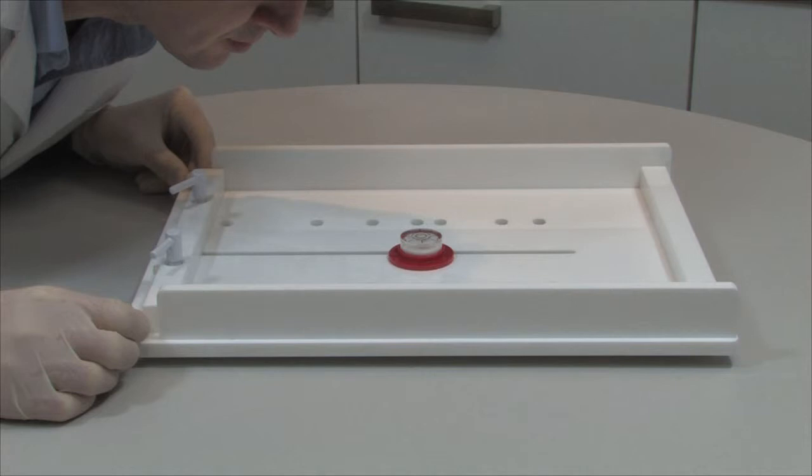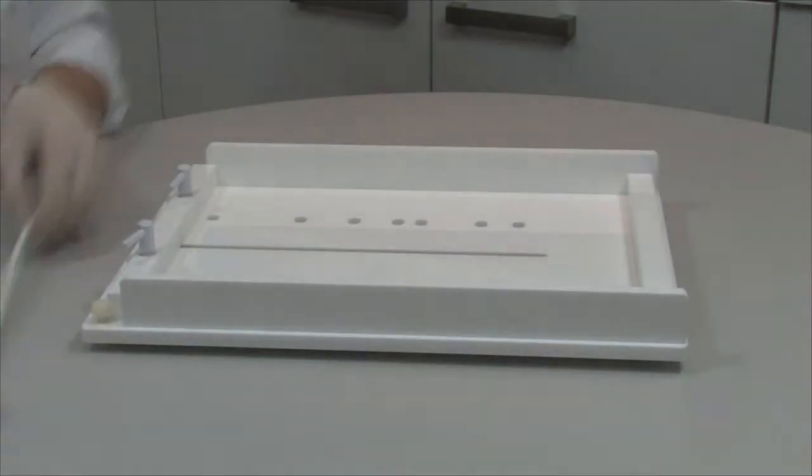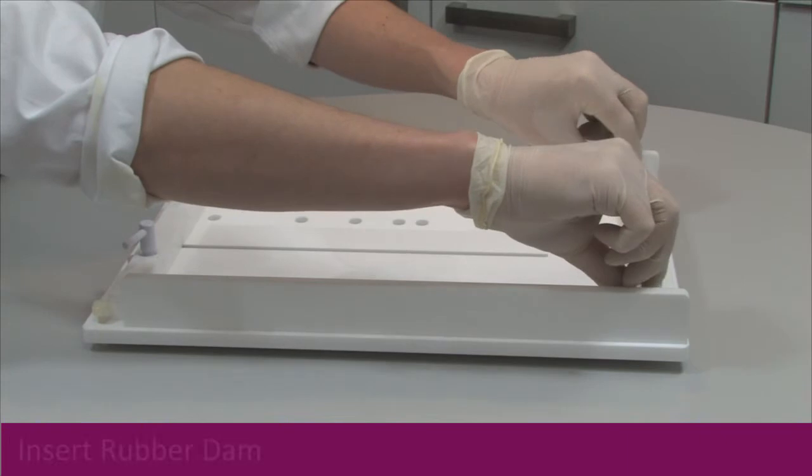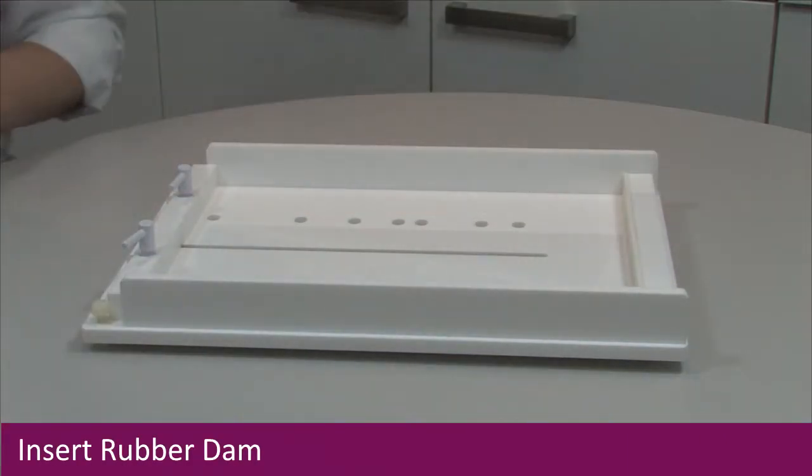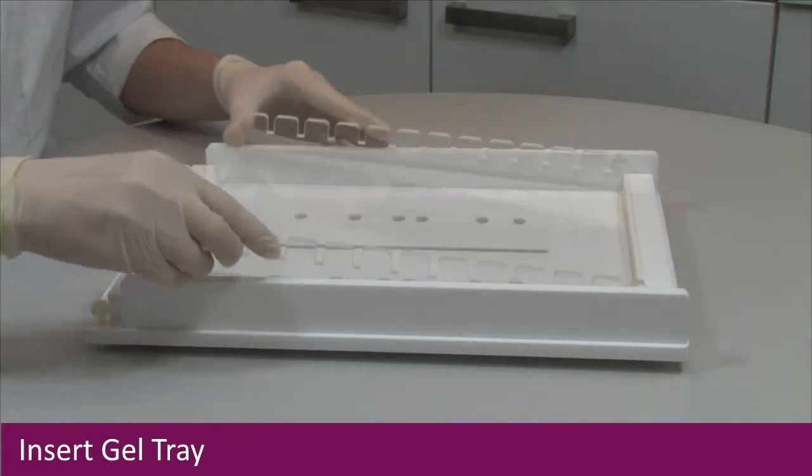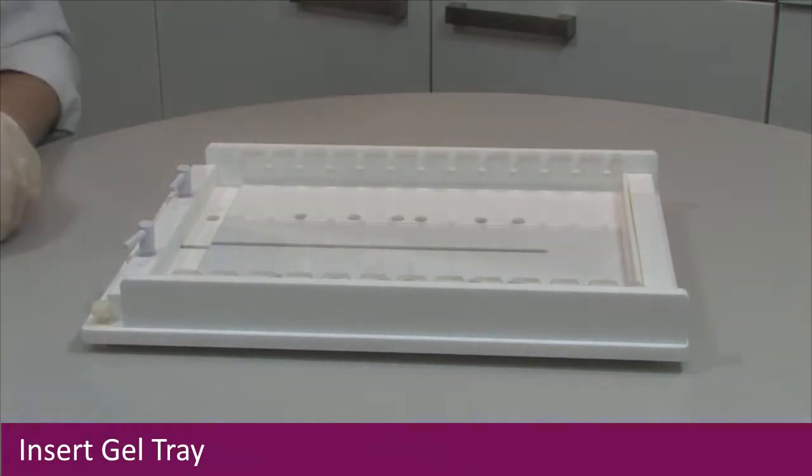This is essential for pouring uniform gels, particularly long MS Screen gels. Align the silicon rubber dam against the fixed barrier at the top end of the flexicaster. Insert the gel tray so that it fits evenly against the rubber dam and fixed barrier.